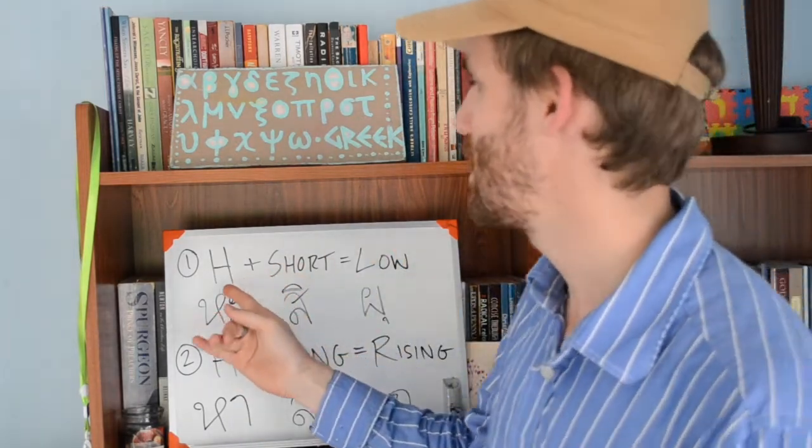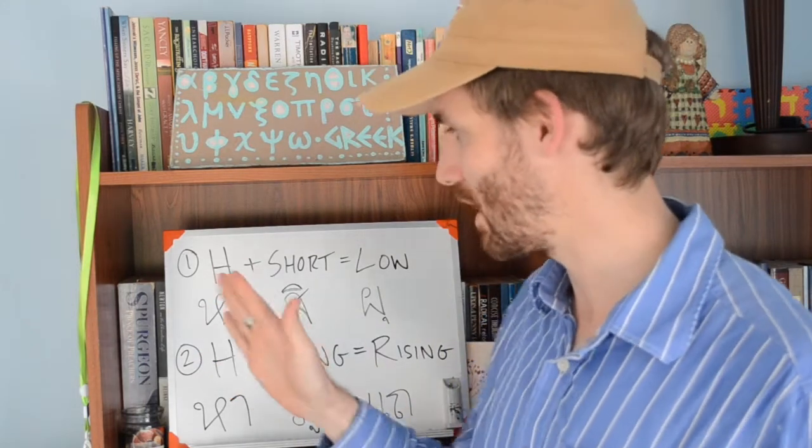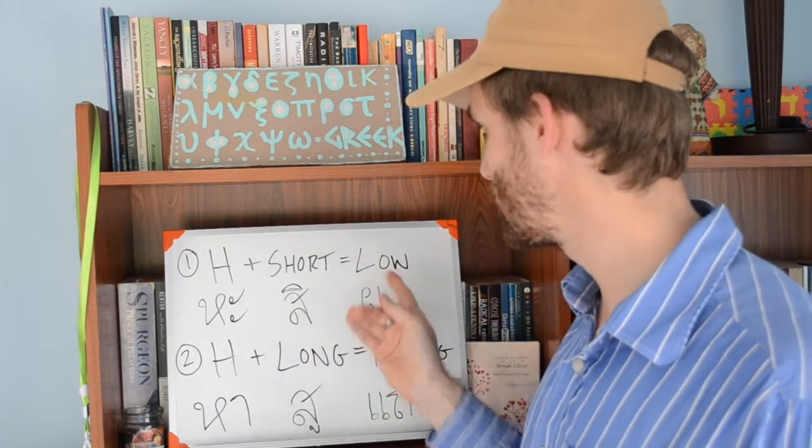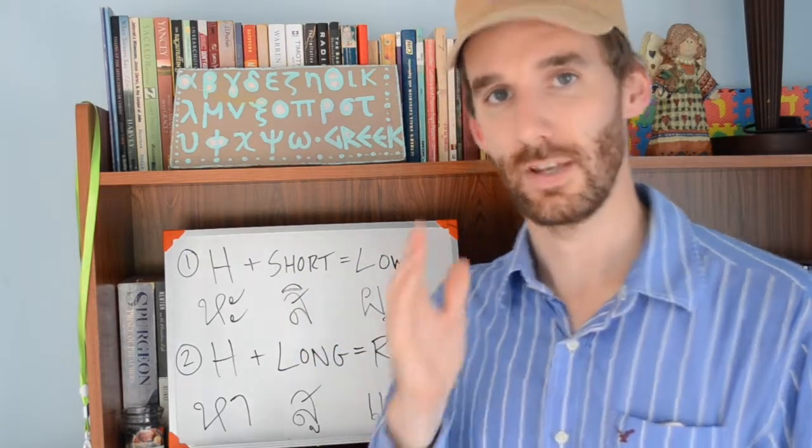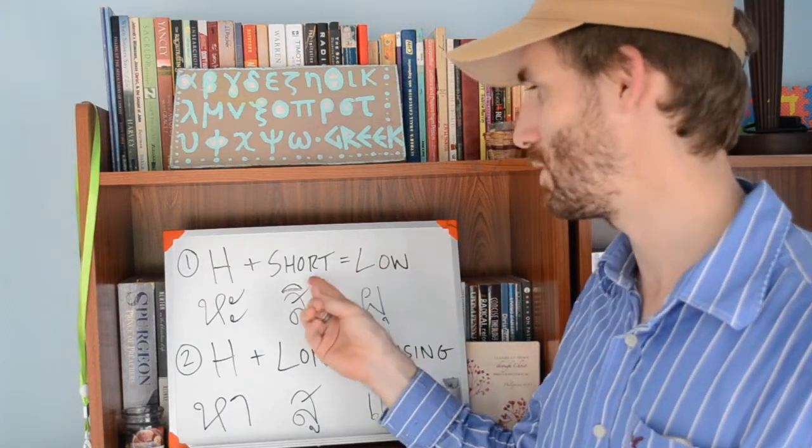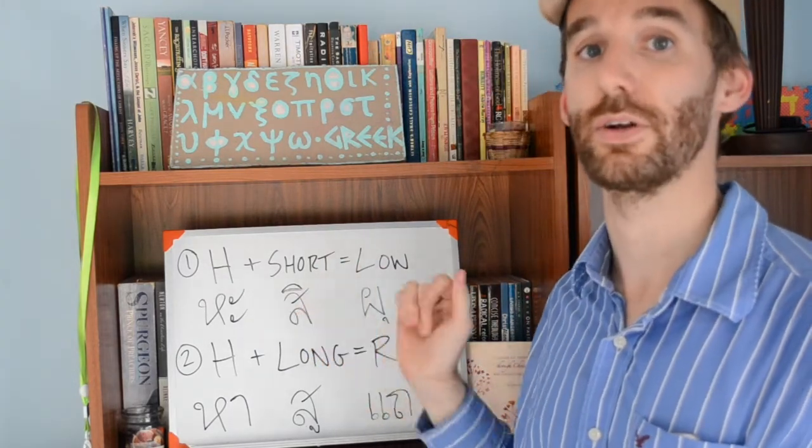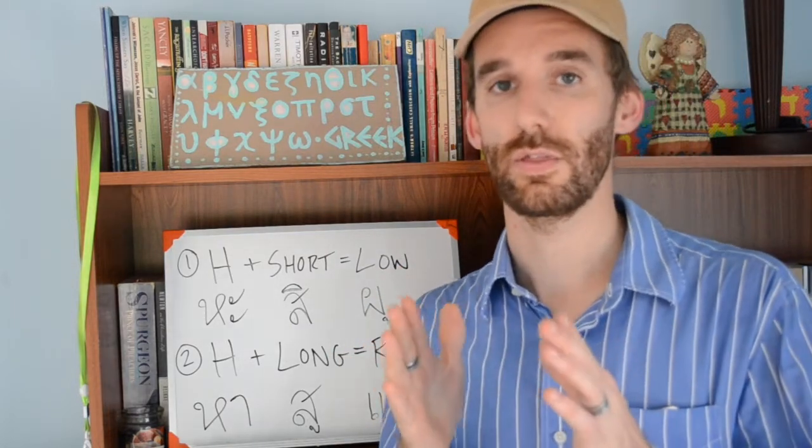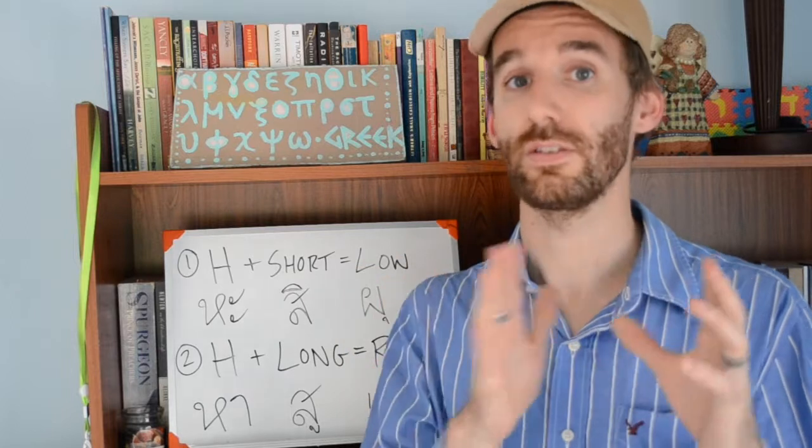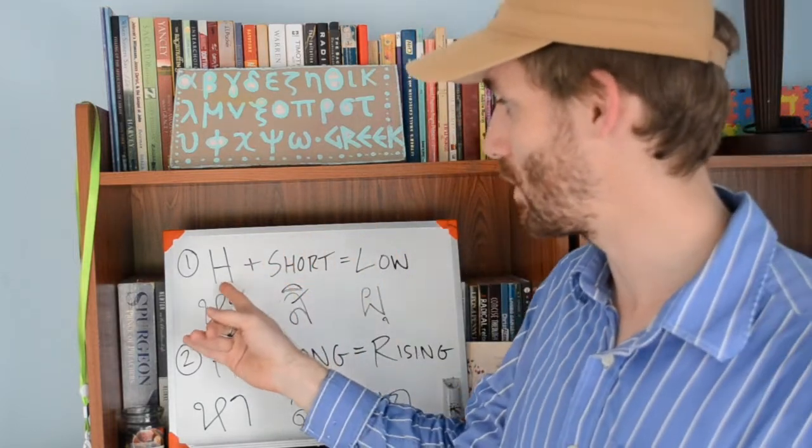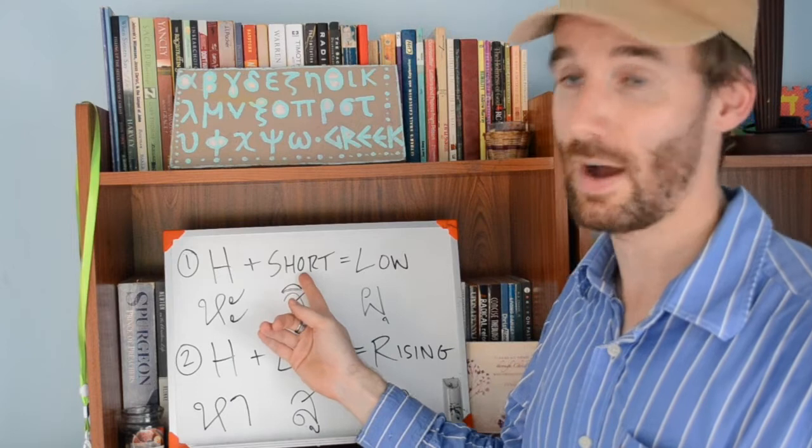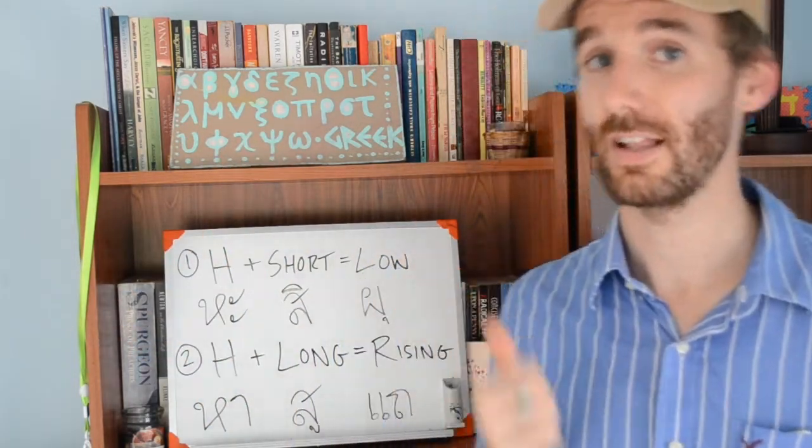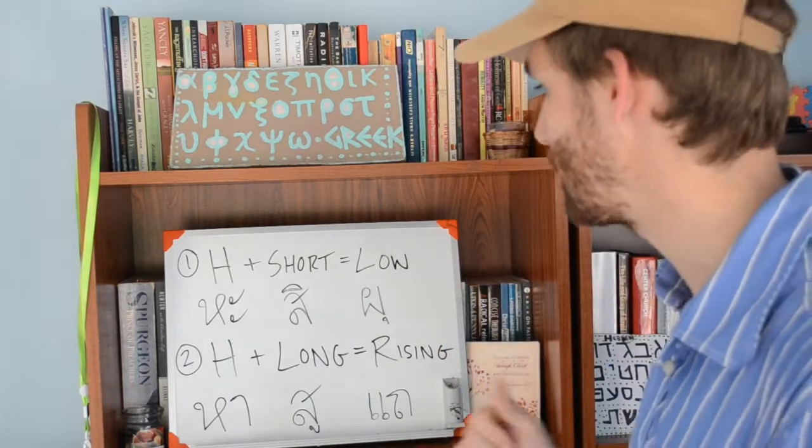Let's look at the first rule here. This H represents a high class consonant, any of the 11 I just mentioned, plus a short vowel equals a low tone. This low tone is going to be short based on the length of the vowel here. This first rule is consistent with the same rule as the middle class consonants first rule. The tone is going to go the same direction, same length.